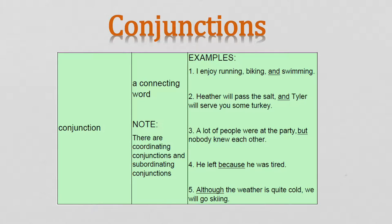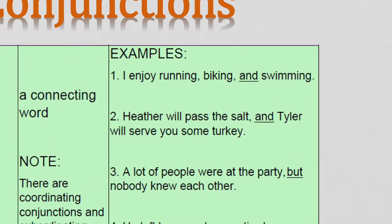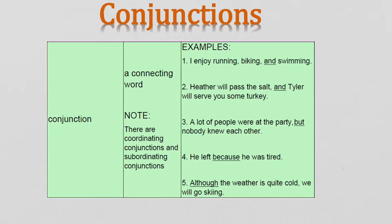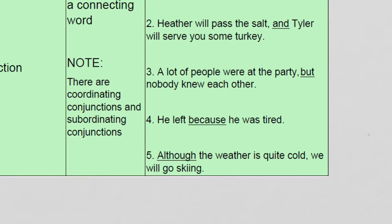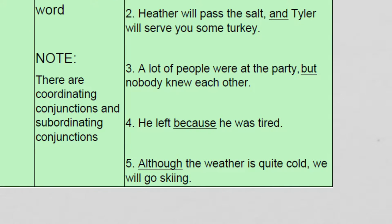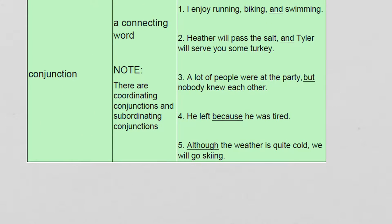Coordinating conjunctions can be used in lists, like the word 'and' — a list of things that I enjoy. Or you'll see examples where we're using coordinating conjunctions to connect two full related thoughts. Subordinating conjunctions are when you start off with part of your thought and then finish it after. Let's continue along here.